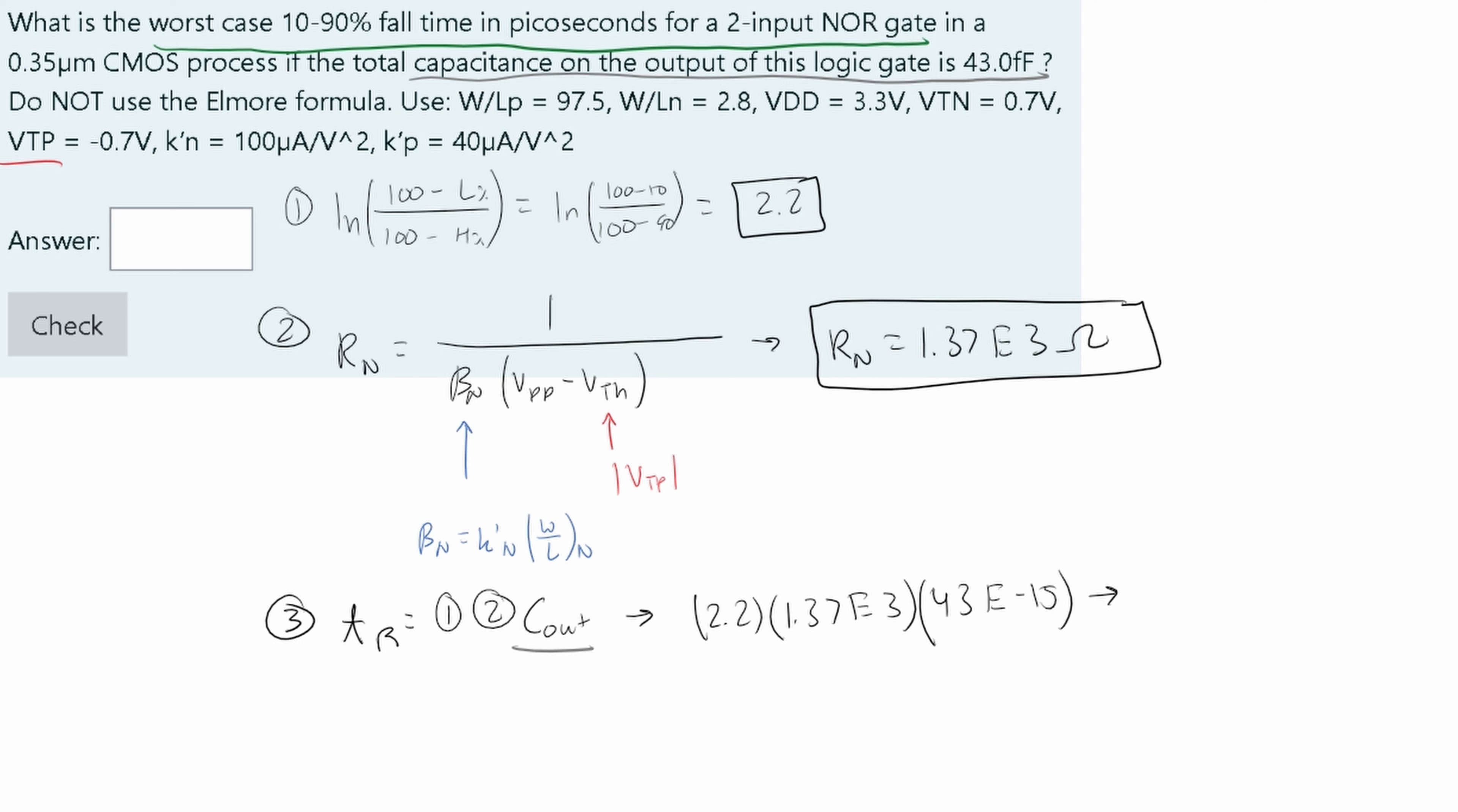This gives me a TR of approximately 1.3 times E to the negative 10. This will be our answer, but it's asking us for picoseconds. One picosecond is 10 to the negative 12. Once we do this out, we get 1.3 times E to the two, which gives us 130. The answer for this problem is 130. That's how we would go about solving for it.